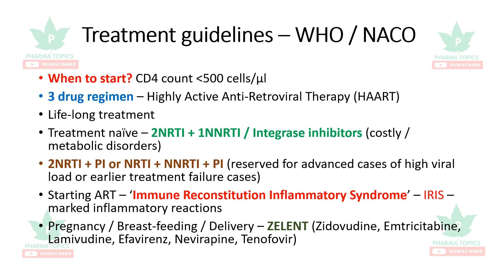For treatment-naive patients, the regimen is two NRTIs plus one NNRTI or an integrase inhibitor. In developed countries, two NRTIs plus integrase inhibitors are preferred, and integrase inhibitors are also used for patients with metabolic disorders. If the patient cannot afford integrase inhibitors, two NRTIs plus one NNRTI is used.